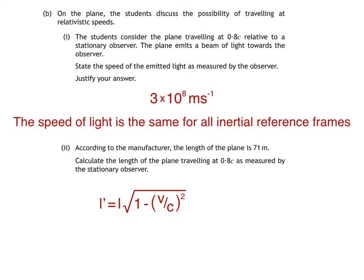So the length measured by the stationary observer is 71 times the square root of 1 minus 0.8 squared, which works out to be 42.6 metres. How the observer's going to measure this with a tape measure I've no idea, but that's our answer. To two significant figures, that's 43 metres.